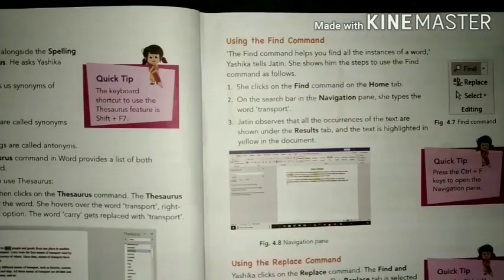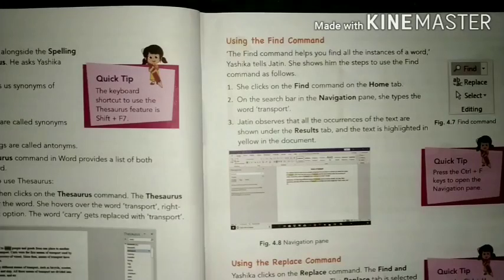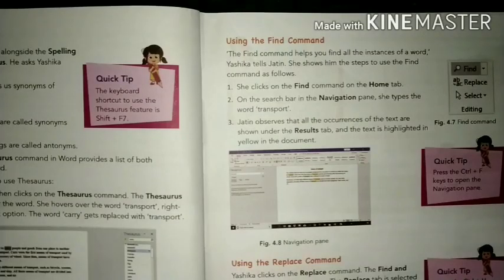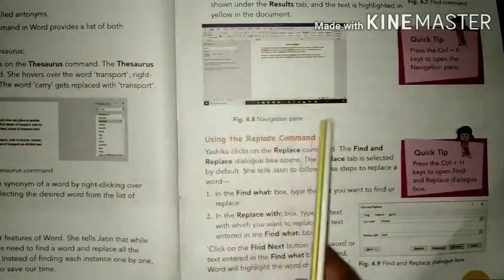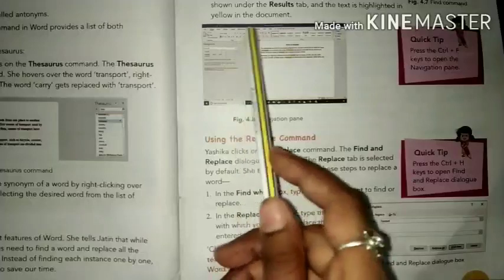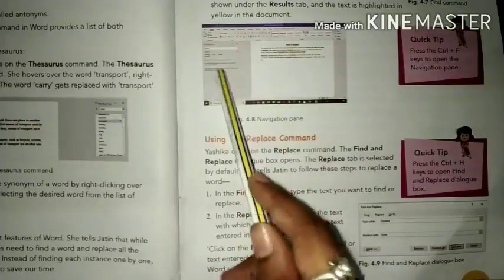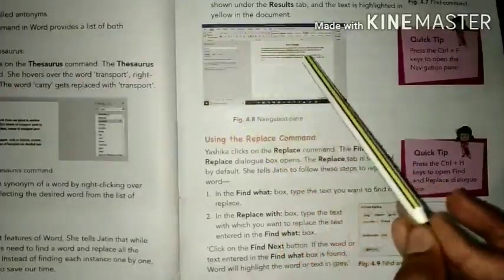Jatin observes that all occurrences of the text are shown under the Results tab and the text is highlighted in yellow in the document. To use the Find and Replace feature, go to the Home tab, click the Find command, and in the navigation pane search bar type the word you want to find. The word in the document will be highlighted in yellow and occurrences will appear in the result tab.